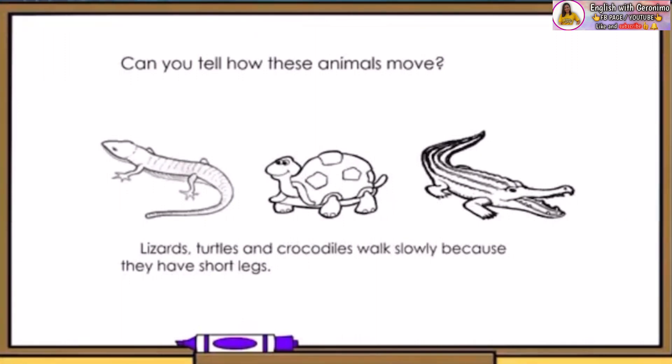Can you name these animals? Can you tell how these animals move? This is a lizard. Have you seen a lizard? How it moves? How about turtles and crocodiles? Lizards, turtles, and crocodiles walk slowly because they have short legs.